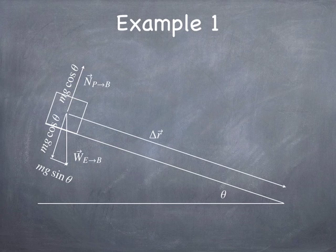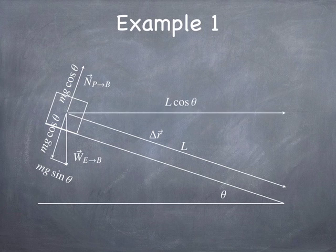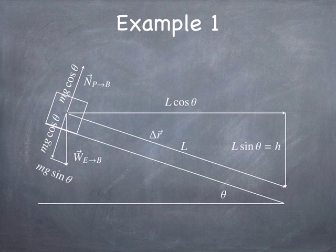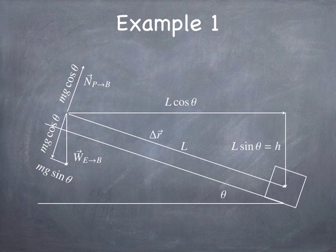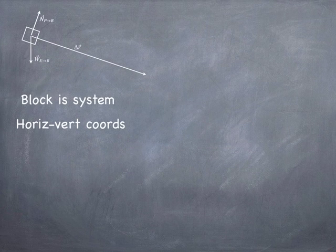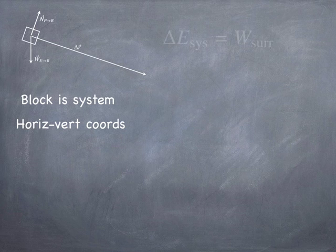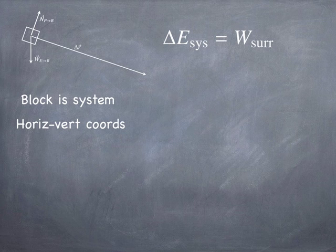The block slides down the plane a distance L. It drops a distance H and goes horizontally a distance L cosine θ. The distance H is L sine θ. It slides down and we stop considering its motion when it gets to the bottom. I want to consider the block as the system, using horizontal and vertical coordinates where horizontal is the x direction and vertical is the y direction. Let's apply the energy principle: the change in the energy of the system equals the work done on the system by the surroundings.